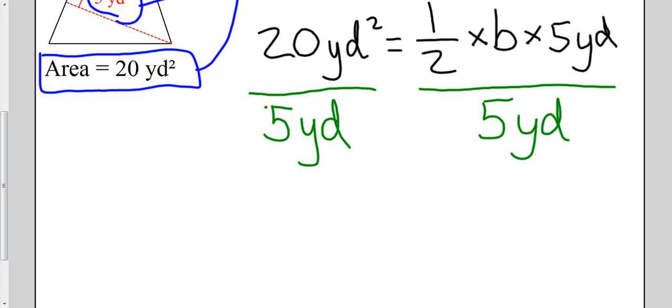So let's just simplify this. What happens? Well what happens to the left hand side here? The left hand side I have 20 yards squared divided by five yards. 20 divided by five is four. And if you remember your exponent laws, here I have yards squared divided by yards.